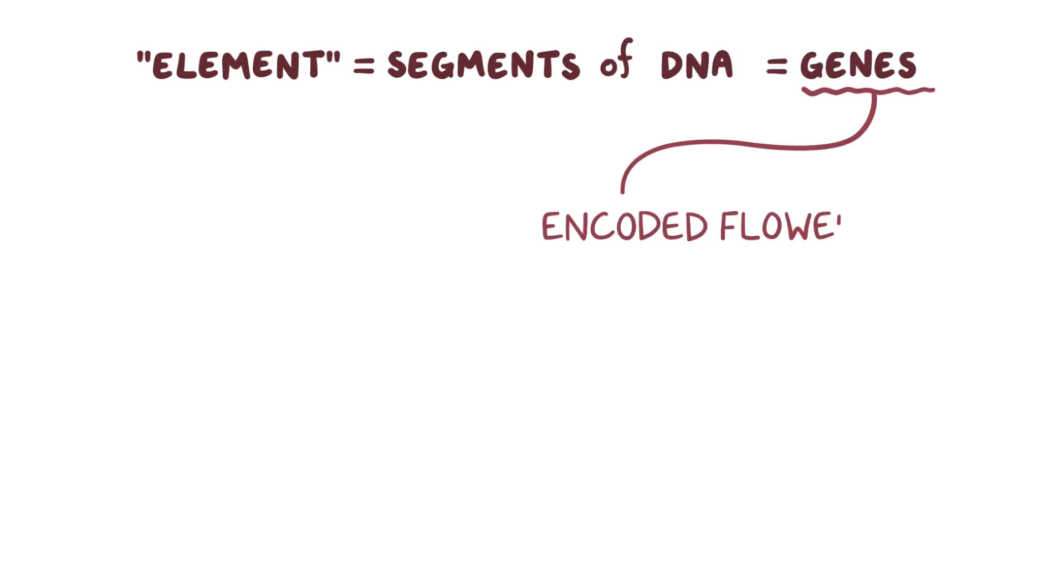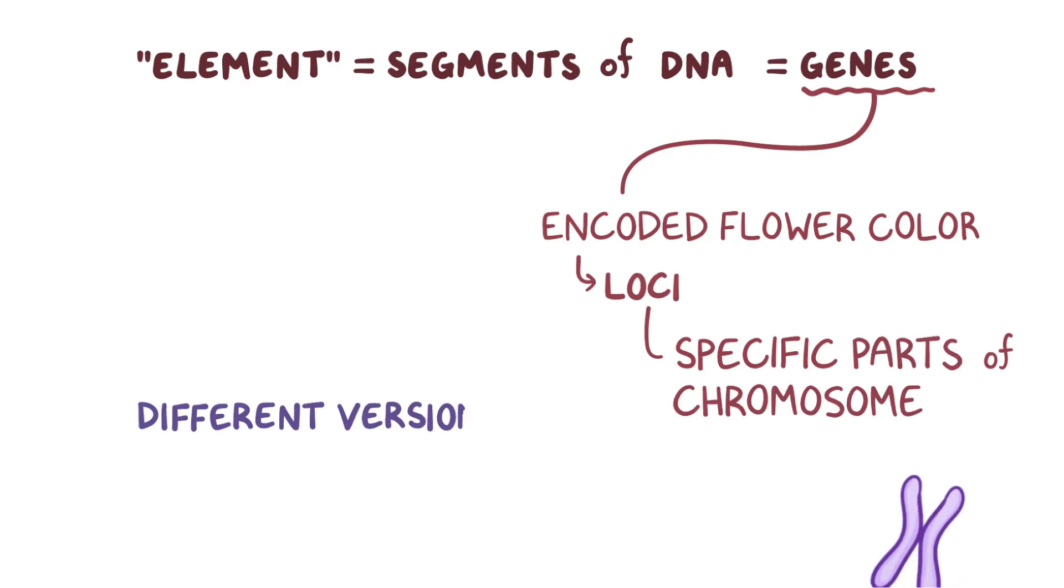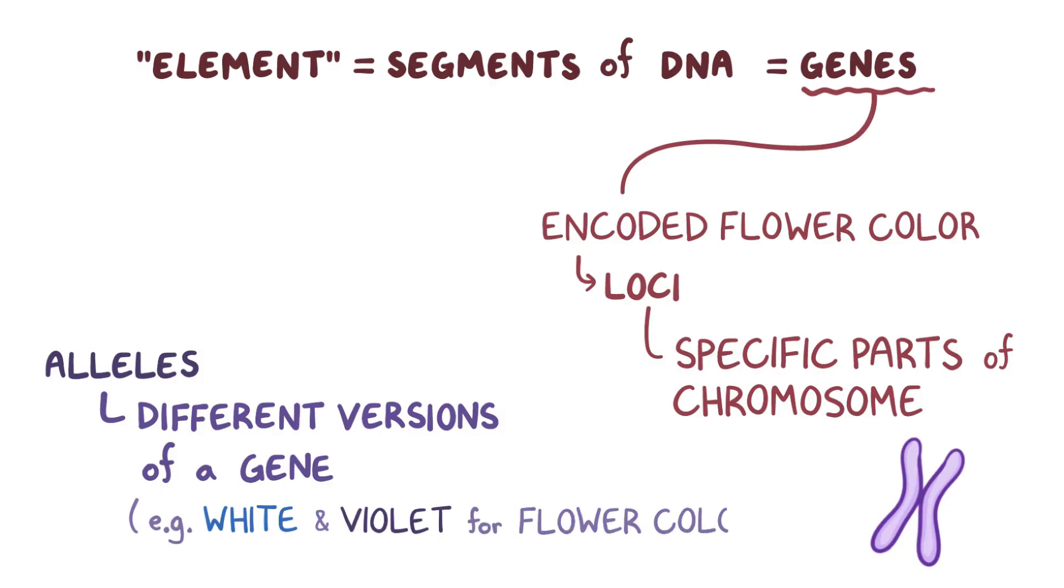Mendel didn't know this at the time, but the element he was referring to were segments of DNA called genes that encoded each flower color. These genes were located on specific parts of chromosomes, called loci. Different versions of a gene are called alleles, and in the case of the flowers there were two alleles, a white and violet allele for flower color.